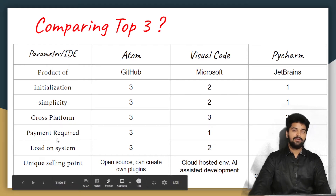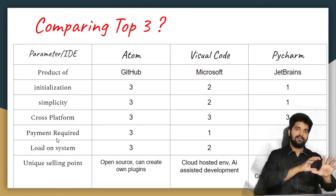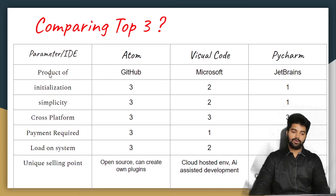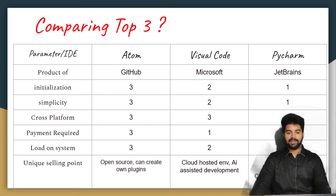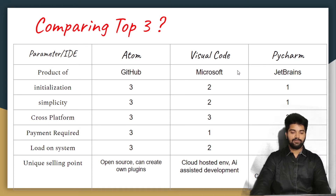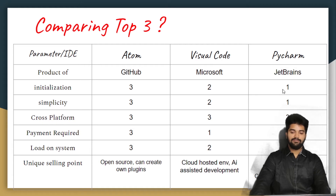So let's see which one we should use and which is best for which level of programmer. Here we have a table — on the left side we have parameters that will be constant when comparing the 3 IDEs and editors, and on the top we have the 3 IDEs: Atom, Visual Code, and PyCharm. First we have the product organization which developed them: Atom is from GitHub, Visual Code is from Microsoft, and PyCharm is from JetBrains. In the table, 3 will be the top rating, 2 will be medium and 1 will be the lowest, and these numbers are based on my opinion.